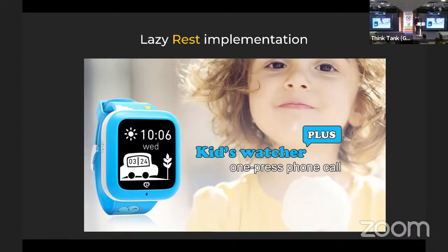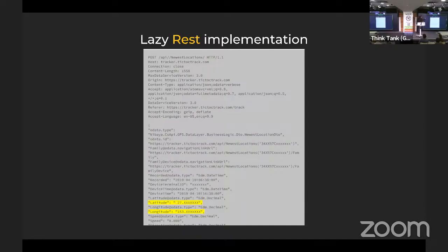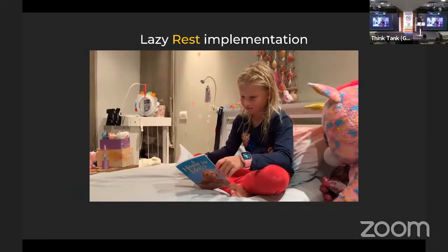TickTock — a really nice Australian smartwatch for helicopter parents. The API had a 'users filter family_identifier equals' parameter with a number. You just changed the number and you ended up with the newest location of someone else's children. You could also update the location of the child — which you should not do. Please don't steal other people's children.